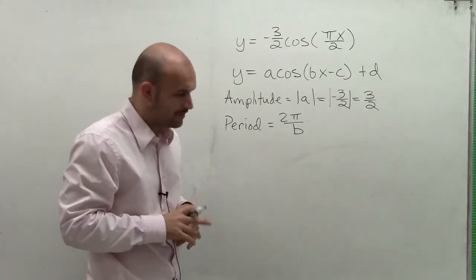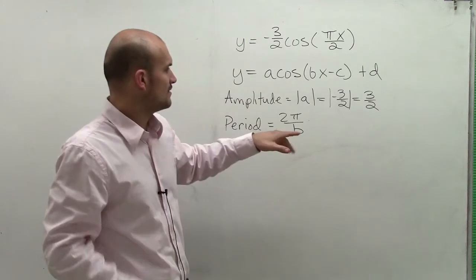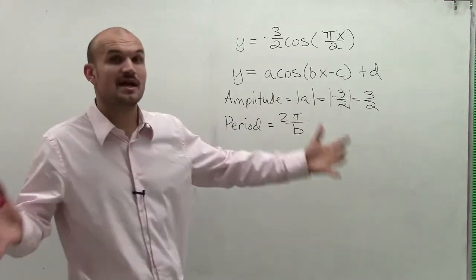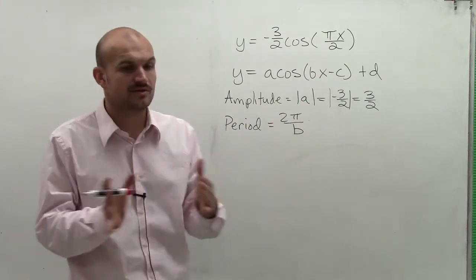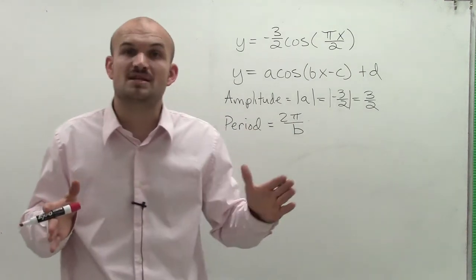Then we take a look at the period. The period for this problem is going to be a little more difficult. We're looking at taking 2 pi, which was our standard period. Remember, the period affects how long it takes for your graph to complete one cycle.